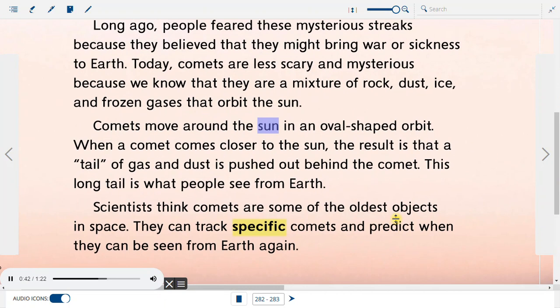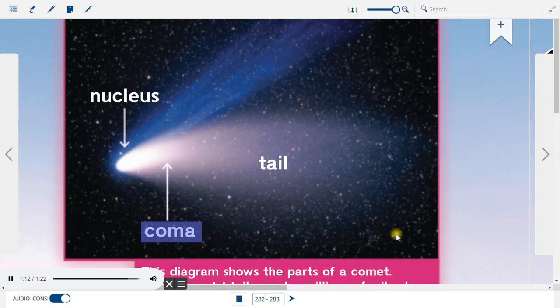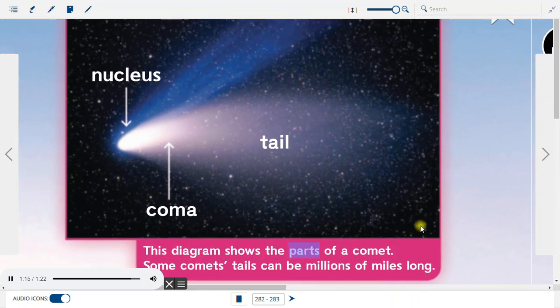Comets move around the sun in an oval-shaped orbit. When a comet comes closer to the sun, the result is that a tail of gas and dust is pushed out behind the comet. This long tail is what people see from Earth. Scientists think comets are some of the oldest objects in space. They can track specific comets and predict when they can be seen from Earth again. This diagram shows the parts of a comet: nucleus, coma, and tail. Some comets' tails can be millions of miles long.